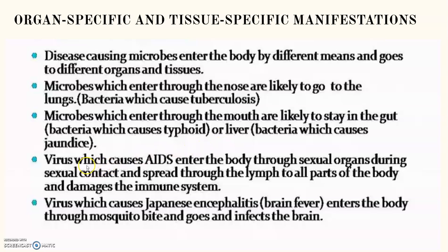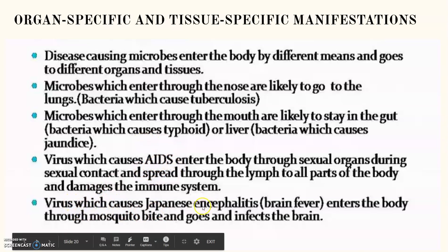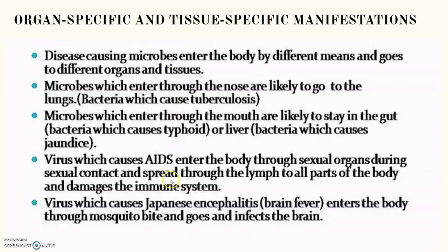Viruses like HIV (which causes AIDS) enter our body through sexual contact with an infected person, travel through the lymph nodes, and damage the immune system — this disease is mostly fatal. Then there are viruses like Japanese encephalitis or brain fever, which enter through mosquito bites and infect our brain. So various microorganisms enter through different means and affect specific organs, causing a particular disease. This is also called tissue specificity of infections.